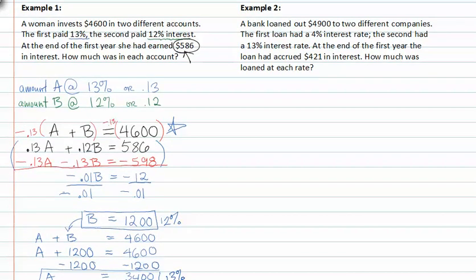Let's look at example two. A bank loaned out $4,900 to two different companies, the first company and the second company. It says the first loan had an interest rate of 4 percent, so that means amount A will be at 4 percent. And amount B or the second amount will be at 13 percent.